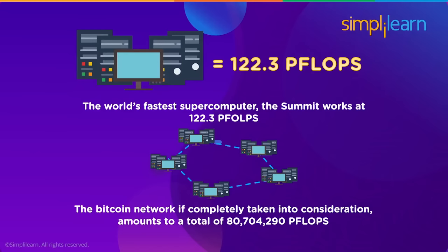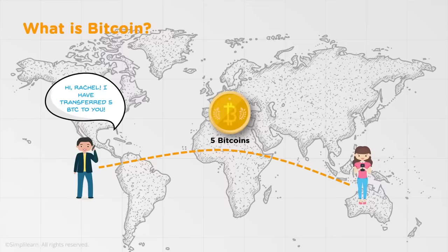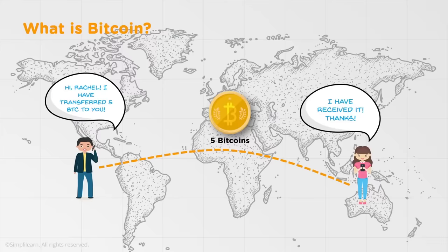Let's talk about what Bitcoin mining is. Someone wants to send five bitcoins to Rachel. Bitcoin is based on the concept of digital currency — anyone across the globe can transfer bitcoin irrespective of geography. You need to open an account on the Bitcoin network, have some bitcoins, and transfer them. You can either purchase bitcoins online through exchanges or mine them. Once you have bitcoins in your account you can transfer to someone whose address you have.